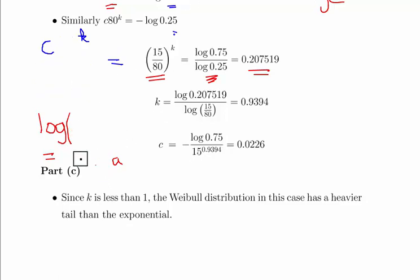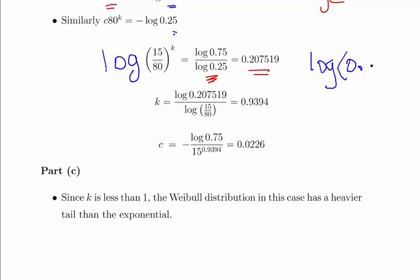What we're going to do here is get the logarithm of this, log of 15 over 80 to the power of K, and let that equal to log of 0.207519. So essentially, that is equal to that. And that can be written as K times log of 15 over 80.